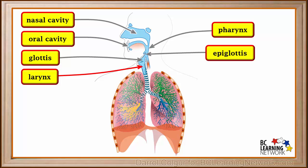The top part of the trachea is called the larynx. The larynx contains the vocal cords. The trachea is the main tube by which air moves from the pharynx to the lungs. The white rings which surround the trachea are made of cartilage, a tough type of tissue that is a bit softer than bone but harder than muscle. These rings prevent the trachea from collapsing.